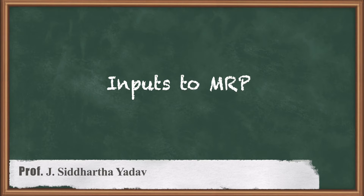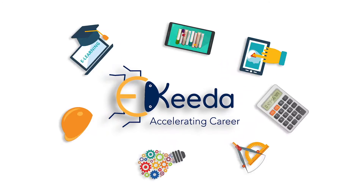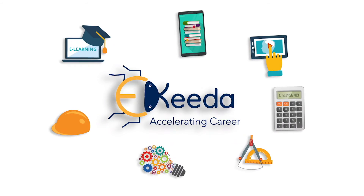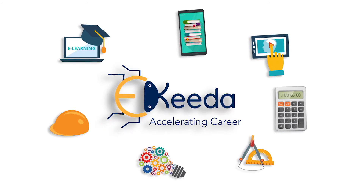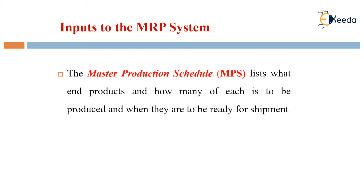Hi all, welcome to this course on PPC. Today we will be learning about the inputs to MRP. The master production schedule lists what the end products are, how many of each are to be produced, and when they are to be ready for shipment. The entire process of making the products ready for shipment and production is generally called the input.